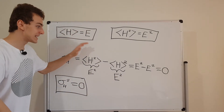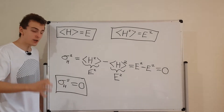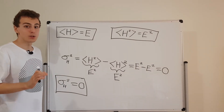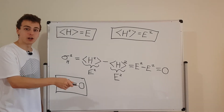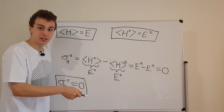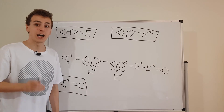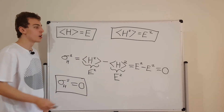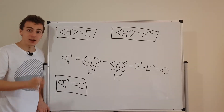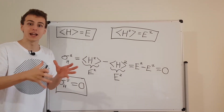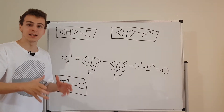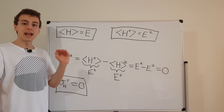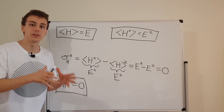But for stationary states — these states of definite energy — we have a very special situation. And that special situation is that if you measure a state that is a stationary state, you are guaranteed with 100% probability to get the expectation value of the Hamiltonian, which is E. That is the energy of that state of definite energy. So each of these stationary states actually has a definite energy — an energy value that is associated with it.